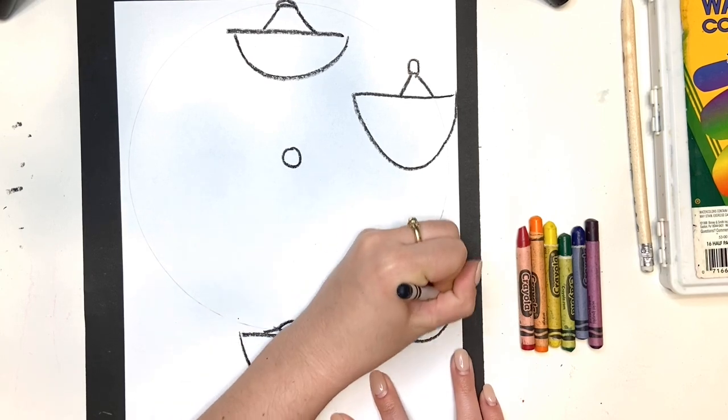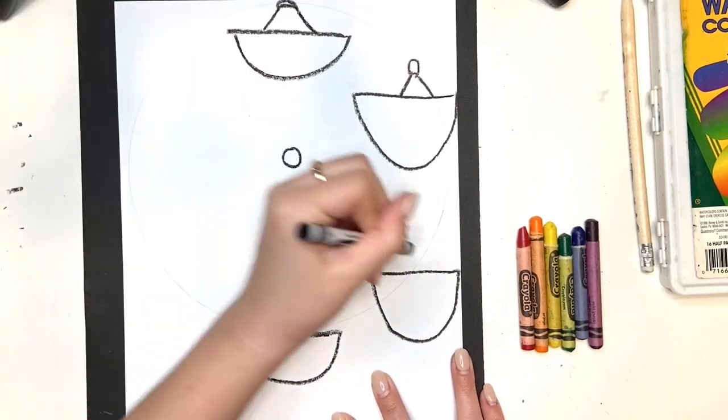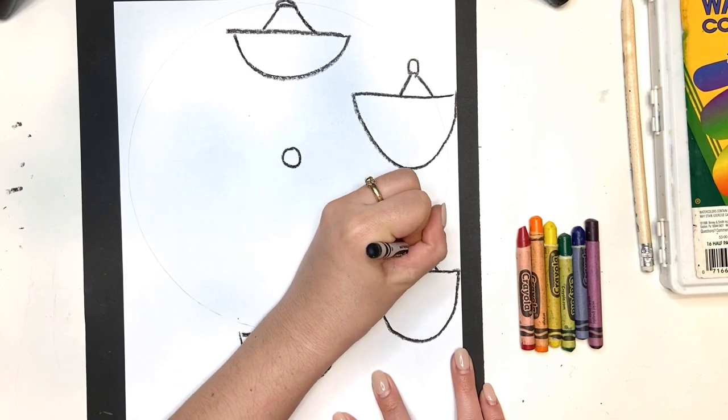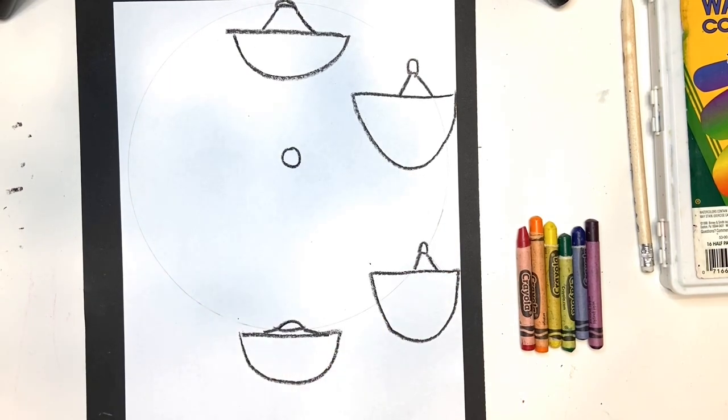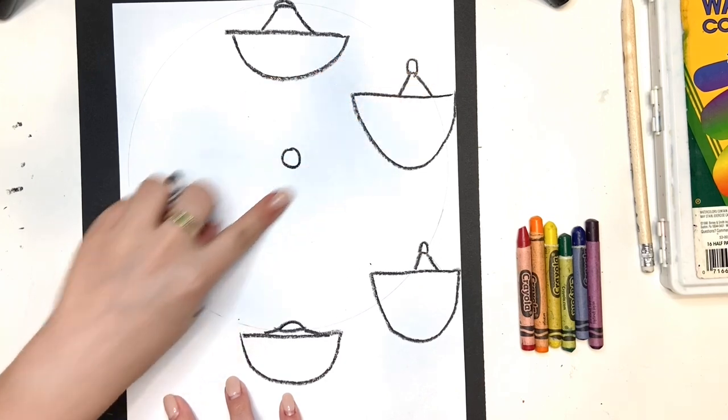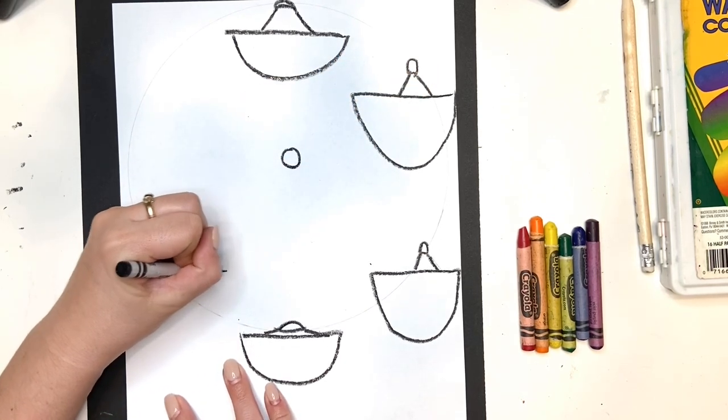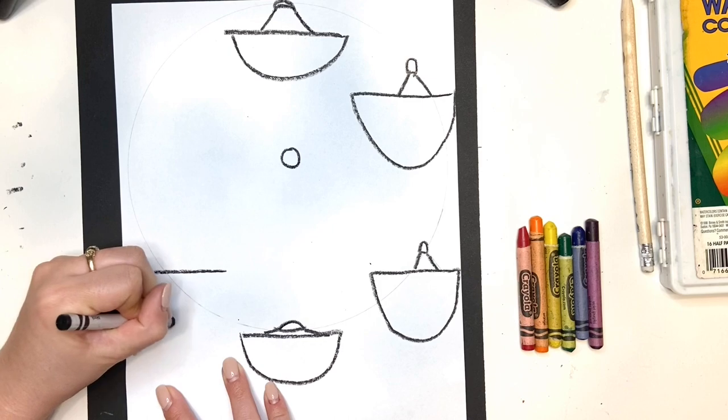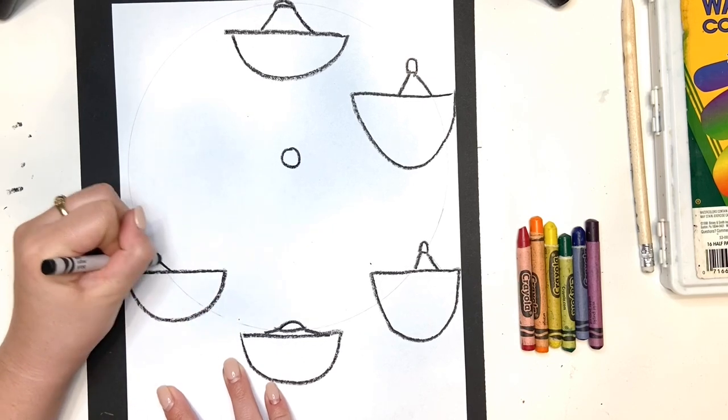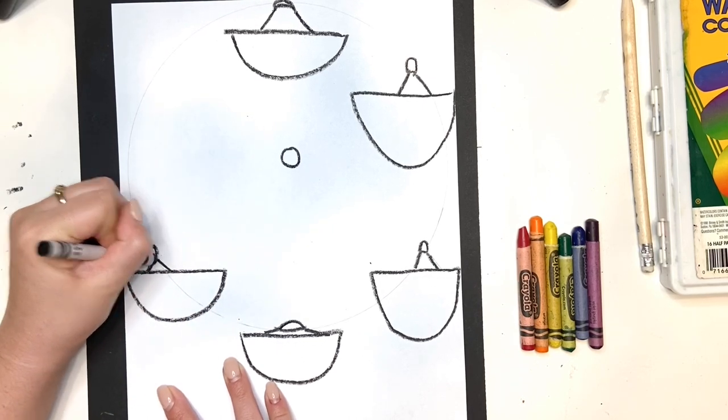And I'm going to go around. And when I'm on the side, right, like this one here, it's kind of off to the side of my circle. So, make sure you have six baskets. And I'm kind of checking to make sure they line up with across the way. I'm going to draw one more.